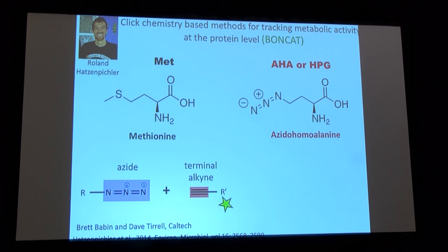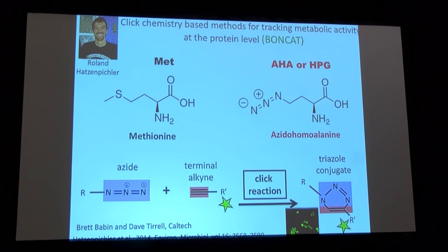The native translational machinery of the cell will incorporate these artificial amino acids into the newly synthesized protein chain. After the fact, we tag those labeled amino acids through copper-catalyzed click chemistry — an azide-alkyne reaction that, in the presence of copper, forms a stable ring structure. With a fluorophore attached, you can visualize newly synthesized proteins in the cell. We've been using this as a fast, quick way of surveying which organisms are actively making new proteins in situ.